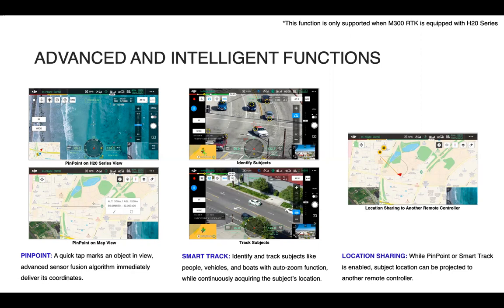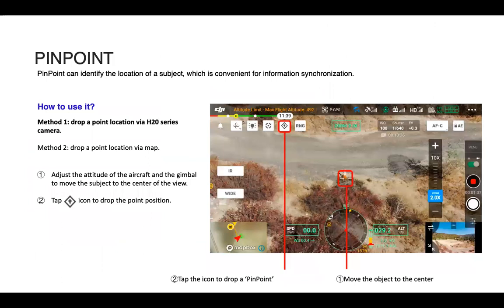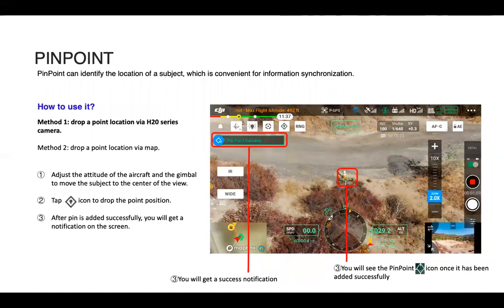We'll hop into Pinpoint first, going a little more in-depth. The first method to drop a point is via the H20 series. You can see the white crosshair in the middle there. You want to move that to center on your object, and in this case we have an orange cone as the example, and tap the icon to drop a pinpoint. So it's that diamond icon and that will drop a pin on the map. You can see you get the message Pinpoint Success, and then the Pinpoint, which is that green diamond icon, is going to appear.